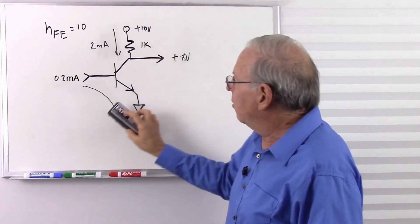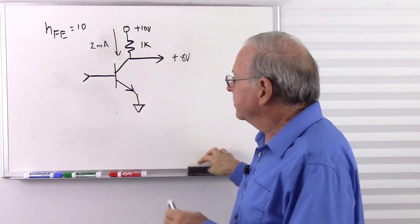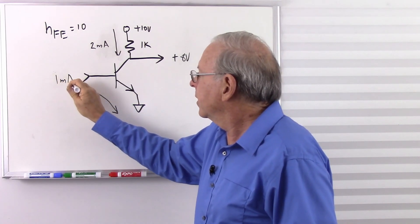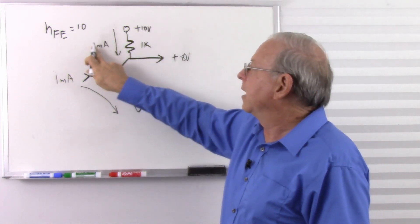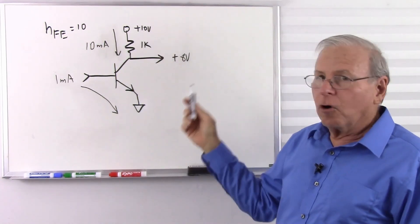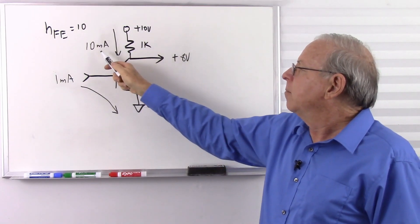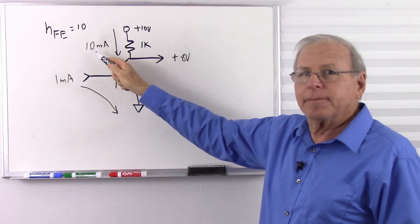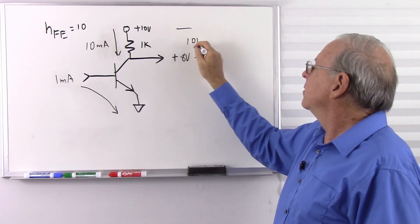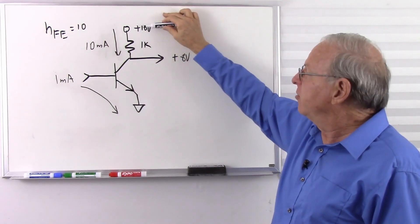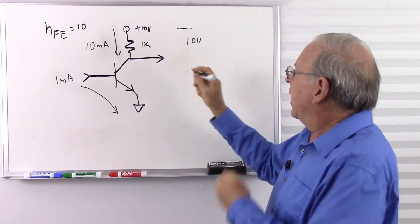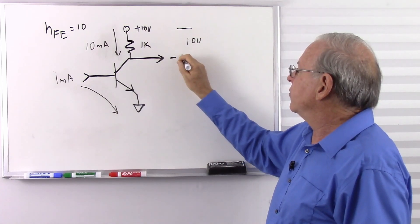Now let's increase the base current all the way up to 1 milliamp. I expect 10 milliamps at the collector. With 10 milliamps and 1k, Ohm's law tells us: multiply 1,000 by 0.01 and we expect 10 volts across the resistor. This top voltage can't change, so the collector voltage must be lower. We start with 10 volts, lose 10 volts, and now we have 0 volts at the collector.